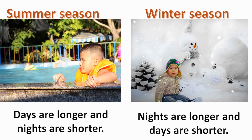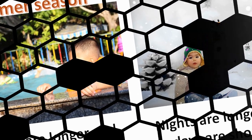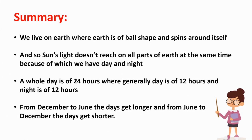Let's find the duration of day and night during the summer and winter seasons. During summer season, the days are longer and the nights are shorter. During winter season, the nights are longer and the days are shorter. To summarize: we live on Earth, which is ball-shaped and spins around itself, so sunlight does not reach all parts of the Earth at the same time — this gives us day and night. The whole day is 24 hours. From December to June, the days get longer, and from June to December, the days get shorter.